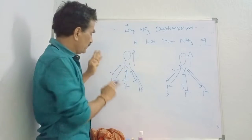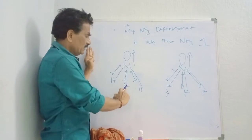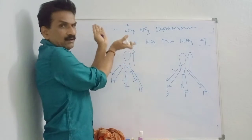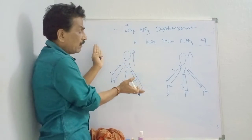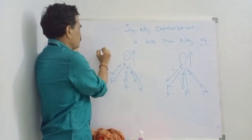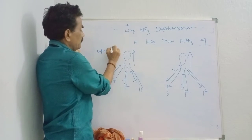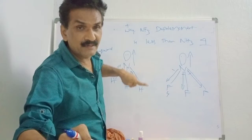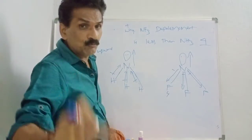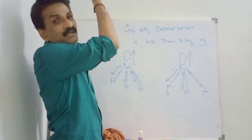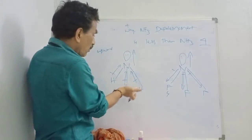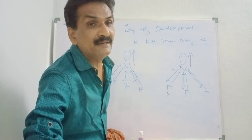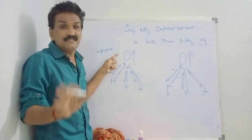Please listen again for NH3. There is a bond dipole moment from each N-H bond pointing upward toward nitrogen. All three bond dipoles are in the upward direction. The lone pair also shows a dipole moment - this bond movement due to the lone pair is also in the upward direction. So all dipoles in NH3 are in the upward direction, meaning mu is not equal to zero - it is a polar molecule with a large dipole moment.